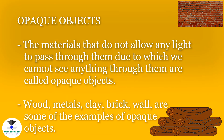Opaque objects. The materials that do not allow any light to pass through them, due to which we cannot see anything through them, are called opaque objects. Wood, metals, clay, brick, wall are some examples of opaque objects.